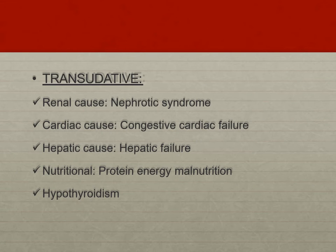Transudative effusions are caused by increased hydrostatic pressure or decreased oncotic pressure. Renal causes include nephrotic syndrome; cardiac causes include congestive heart failure; hepatic failure can lead to both increased hydrostatic pressure and decreased oncotic pressure. Nutritional causes such as protein-energy malnutrition reduce overall protein content in the blood. Hypothyroidism is also a cause.